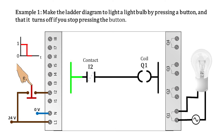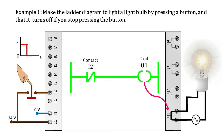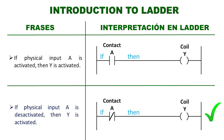By pressing the button, it opens the circuit, sending a low voltage level to the PLC input I2, which is translated as a logical zero. This makes the I2 contact return to its default state — which is normally closed — that is, it is going to activate or close. In this way the horizontal line is energized and the Q1 coil is activated. This coil immediately sends a signal to close the Q1 output, making the light bulb turn on. The bulb will stay on as long as the button is pressed. This process complies with the phrase: if the physical input A is deactivated, then Y is activated.